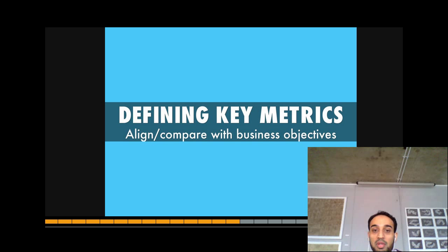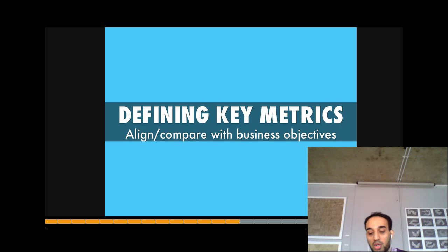One of the mistakes that happens is you go into the analytics, you get numbers from best practices, and go: my website's not behaving that way — setting yourself up for disappointment. But if you know what your own objectives are, you're not set up for disappointment. You can say: we're not reaching this number right now — what can we do to reach it? Or: we are reaching the number, great, let's focus on something else.